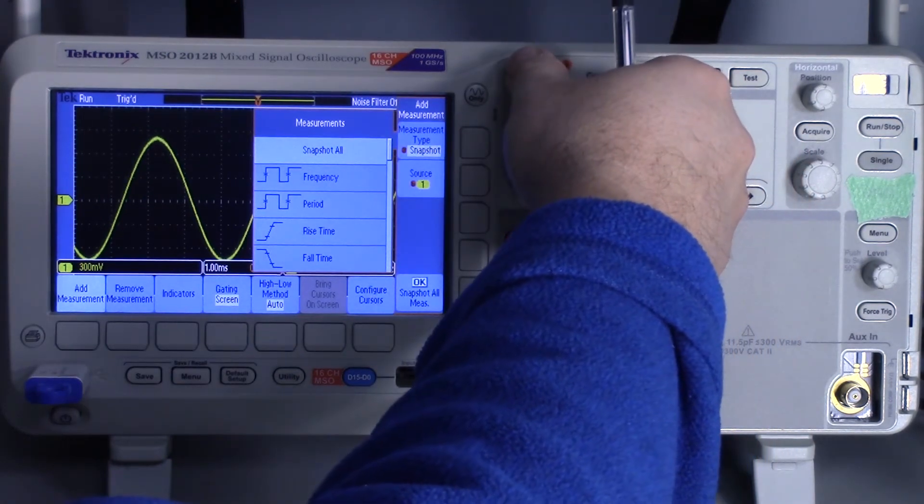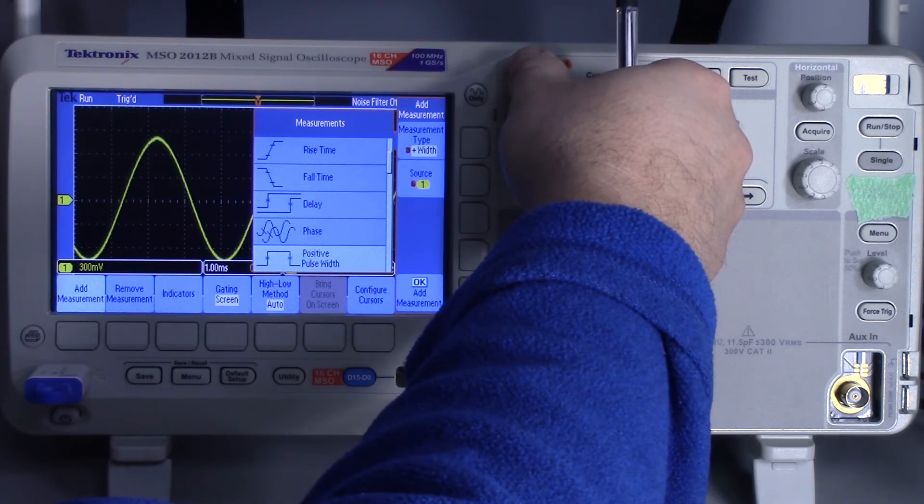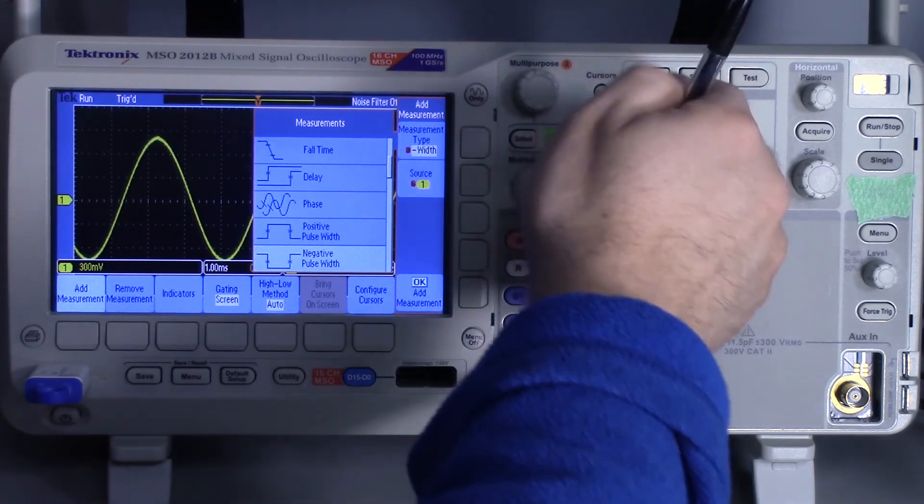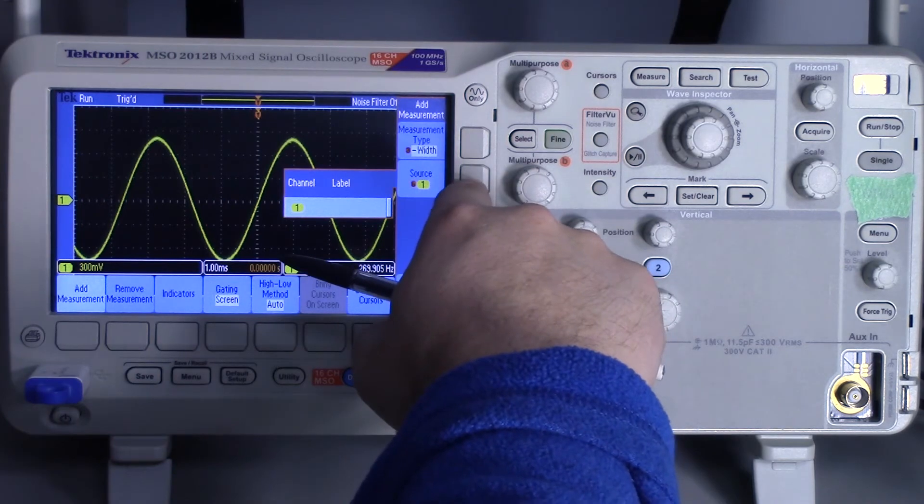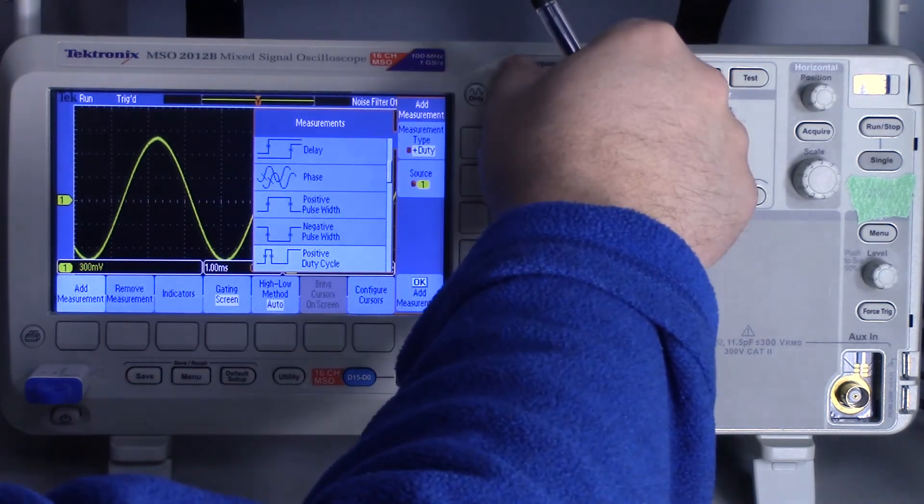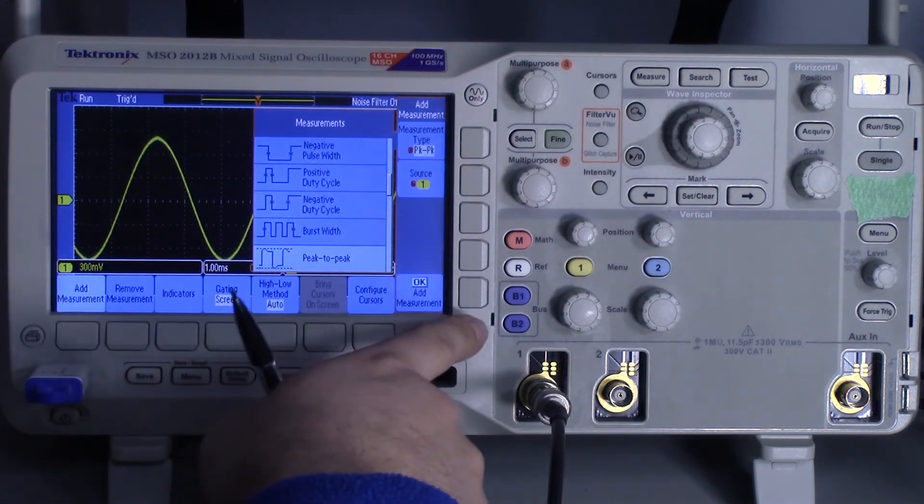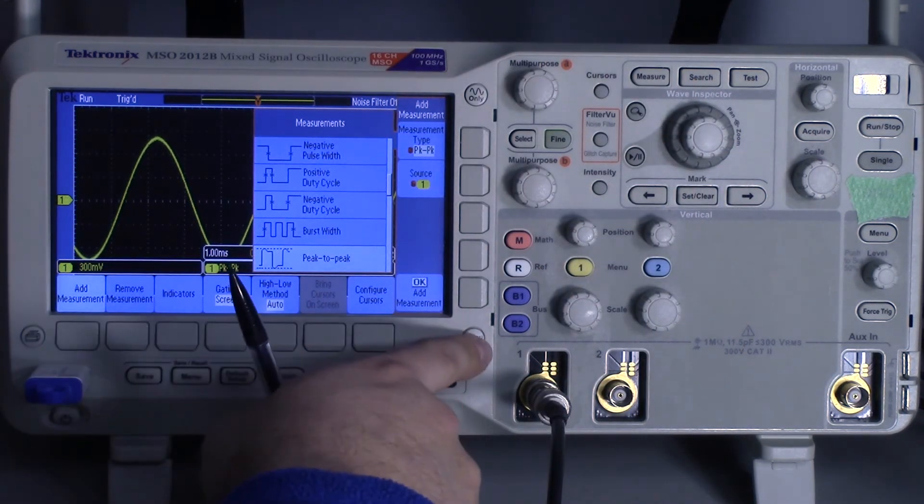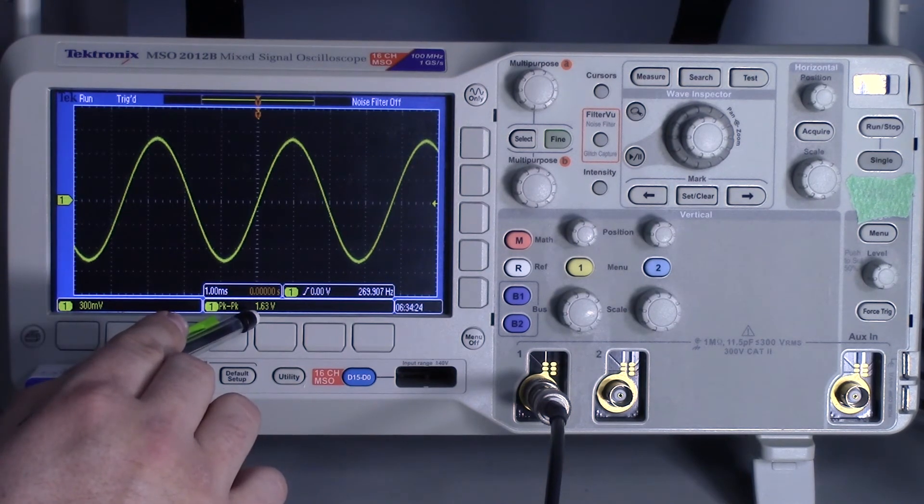And I want to go over here and add measurement. I'm going to use the multipurpose knobs. I want to measure the peak-to-peak voltage. So I just scroll down. Now I want to make sure I'm on source A. Obviously, that's the only thing that's plugged in right now. And so I want to go until I find peak-to-peak, and then I just press OK. So now it's telling me I've got a peak-to-peak voltage of 1.6.